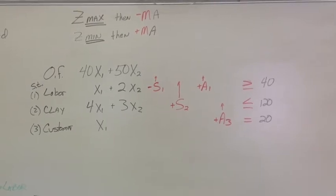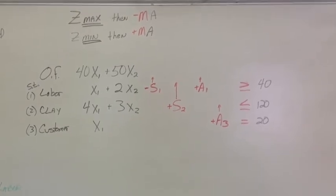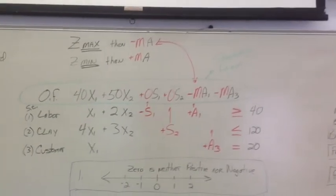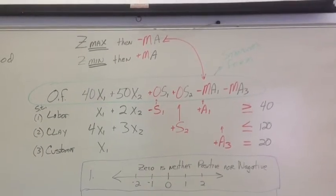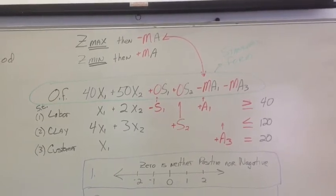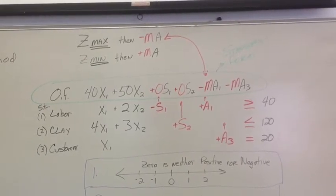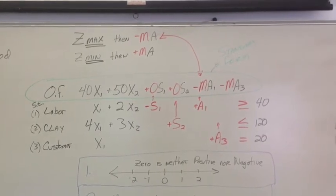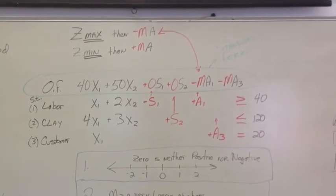Later on in simplex, we'll show you what each of these means. Okay, so now I've rolled all the equations up into the objective function. Notice my objective function in standard form now is 40x1 plus 50x2 plus 0s1 plus 0s2 minus ma1 minus ma3.